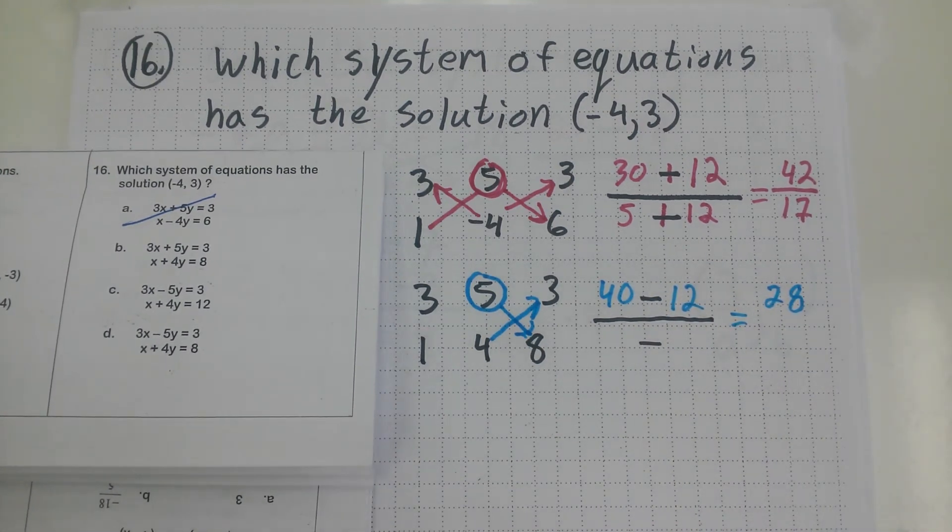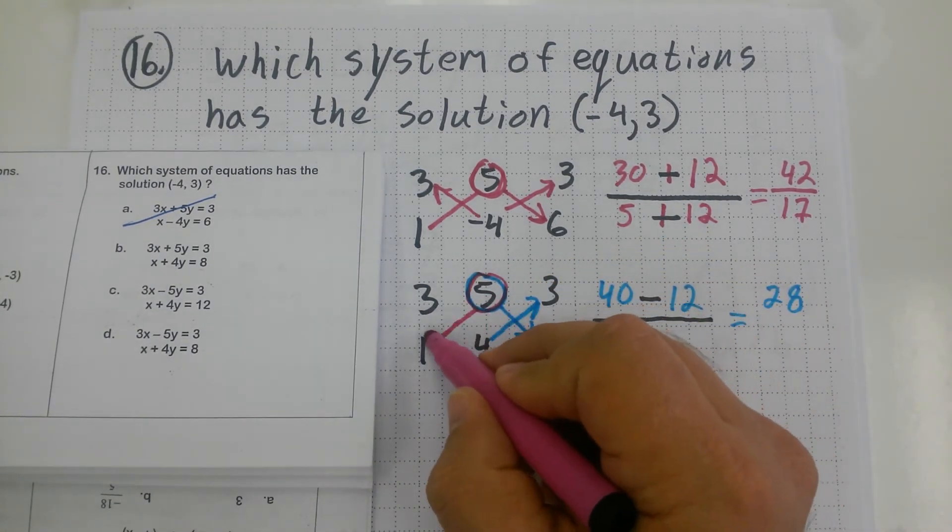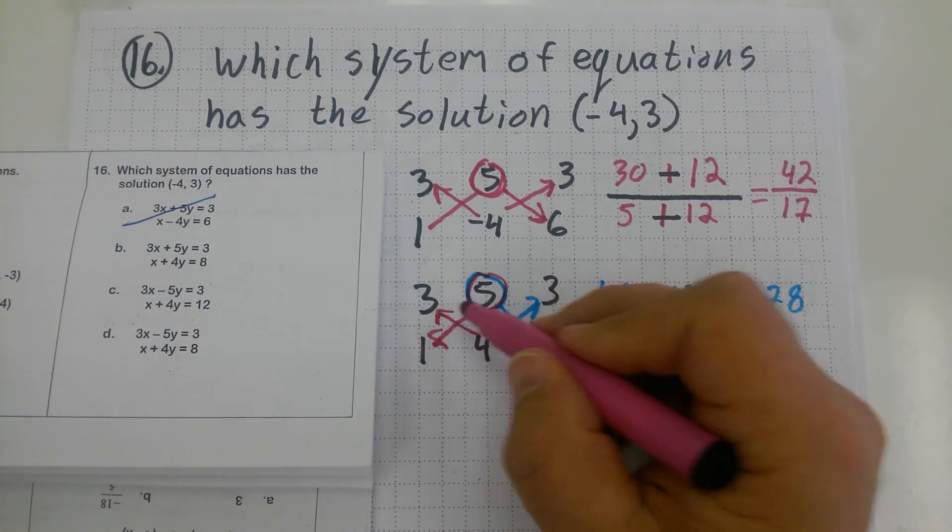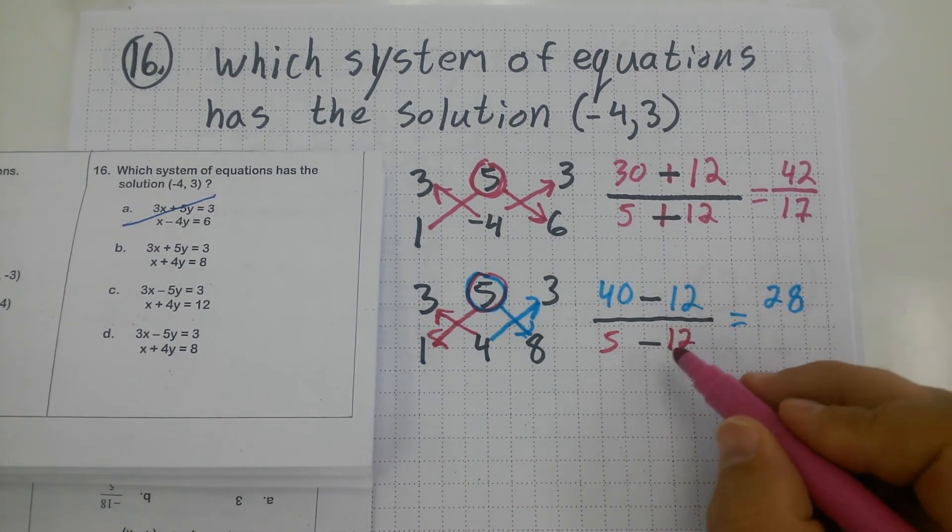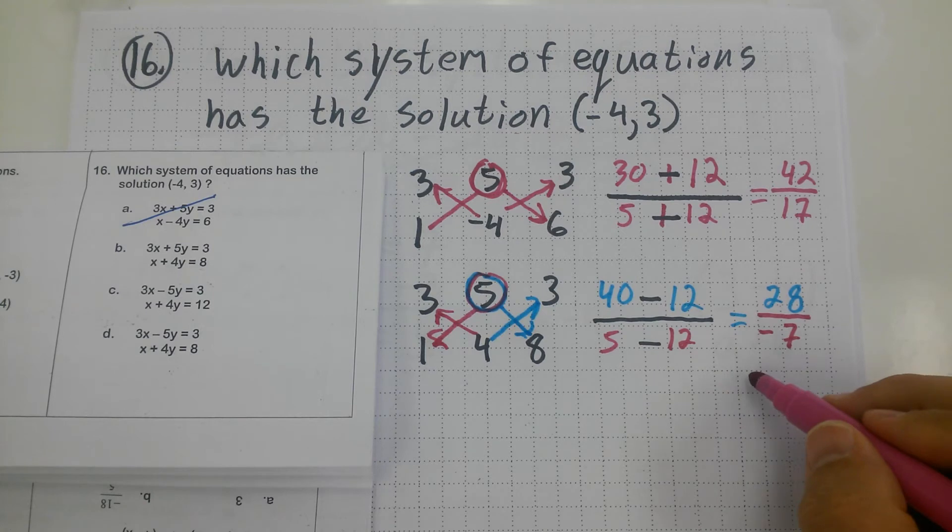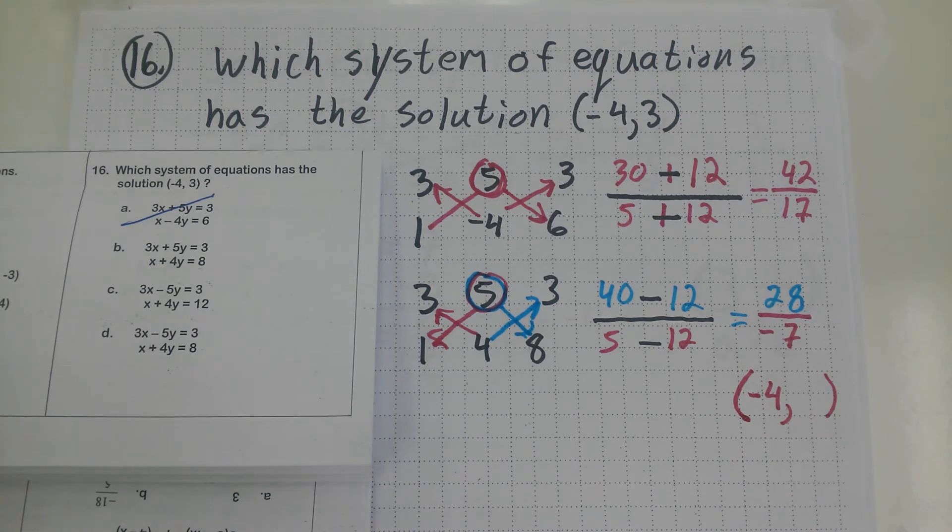Now I go back to the pivot. Go back to the pivot, 5. And I do 5 times 1, which is 5. And 4 times 3, and that gives me 12. 5 minus 12, that's negative 7. 28 divided by negative 7, take a look. That's going to give me negative 4. So I'm kind of thinking that this might be the answer.